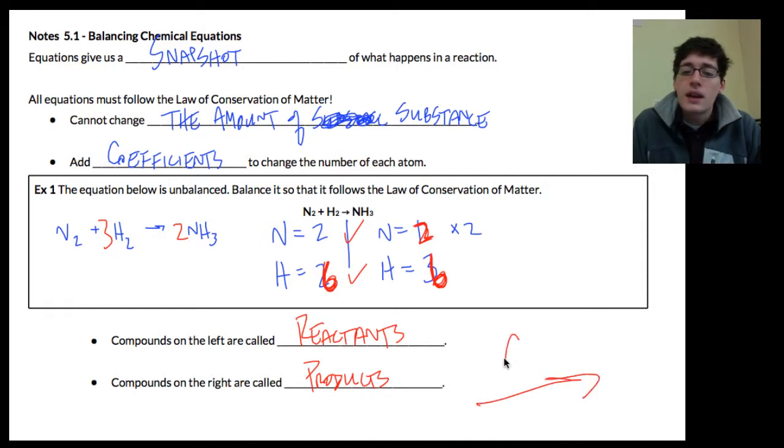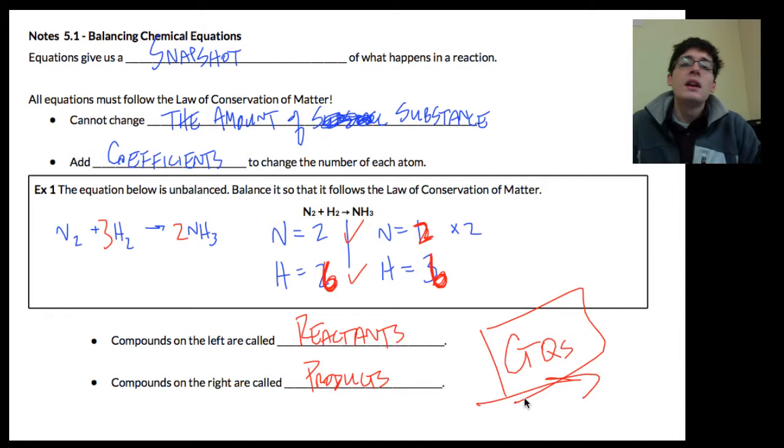So there are some CTQs over on the right-hand side of the screen. You can do those in some of the blank space in the packet. I've also got a balancing worksheet. And we've done the lab, the SMORE lab that asks you to balance chemical reactions. So take a look at all of those three things and be able to prove to me that you know how to balance a chemical reaction.